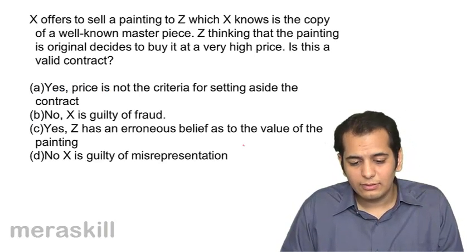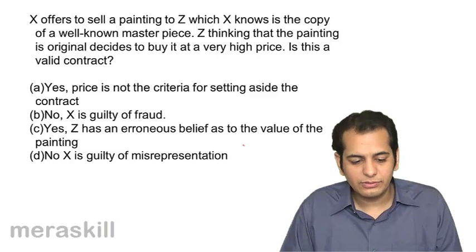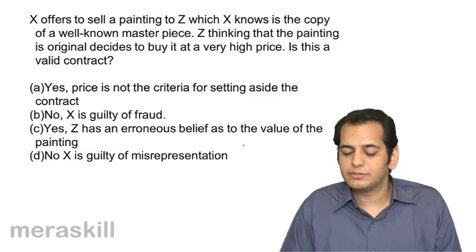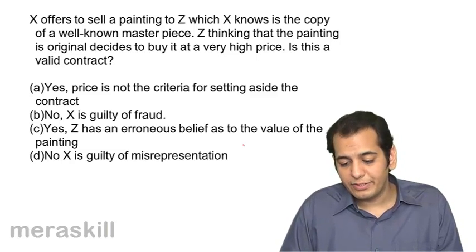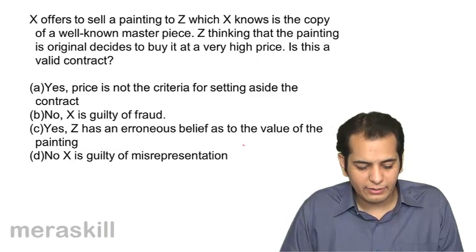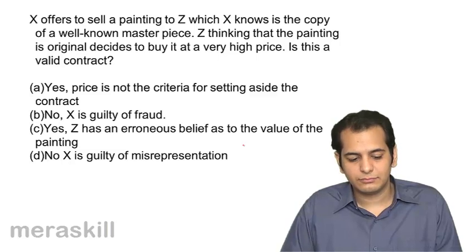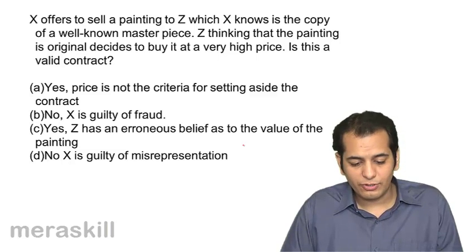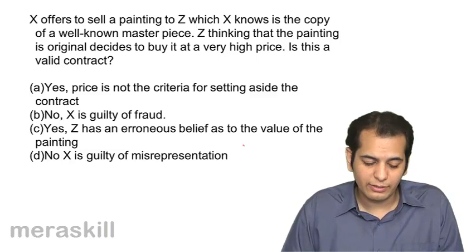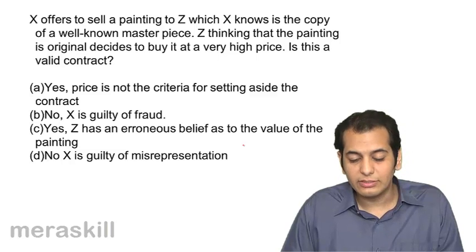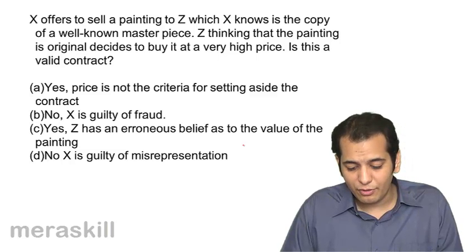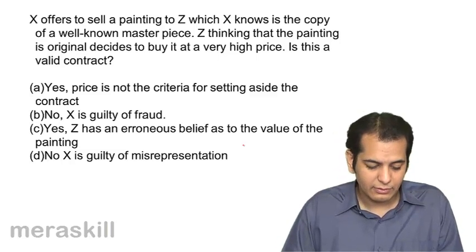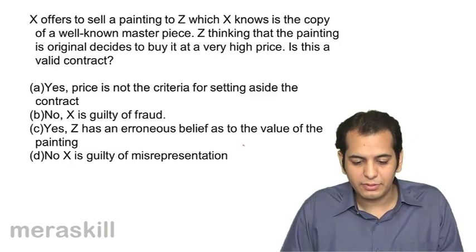X offers to sell a painting to Z which X knows is a copy of a well-known masterpiece. Z, thinking the painting is original, decides to buy it at a very high price. Is this contract valid? A: Yes, the contract is valid — the price is not the criteria for setting aside the contract. B: No, X is guilty of fraud. C: Yes, Z has an erroneous belief as to the value of the painting. D: No, X is guilty of misrepresentation.